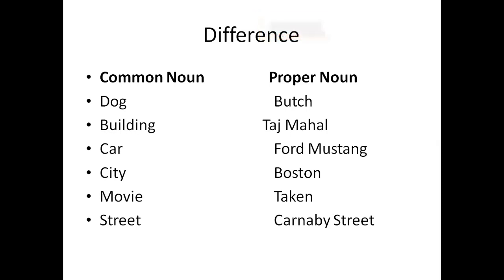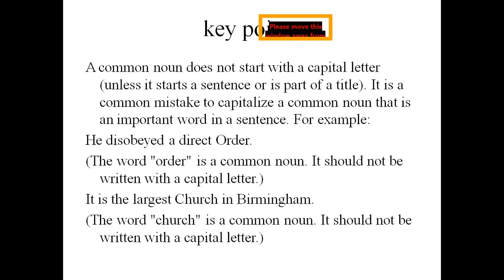Every city has streets — we don't know which one. But when we specify that this street has been given a specific name, that is the difference between a proper noun and a common noun.